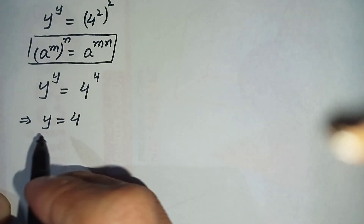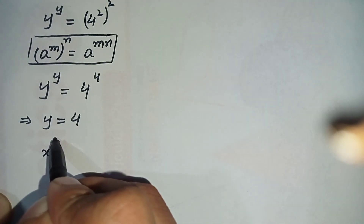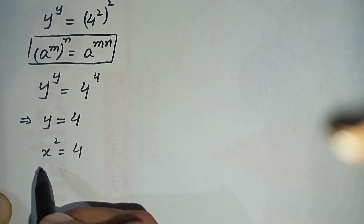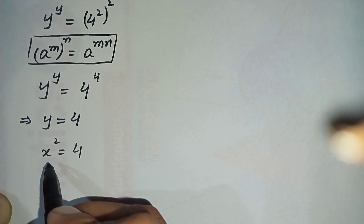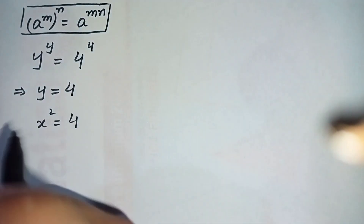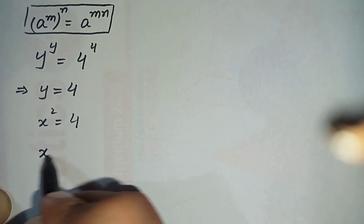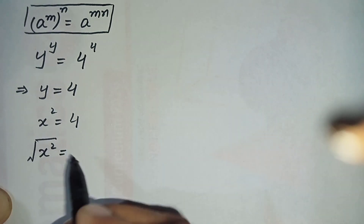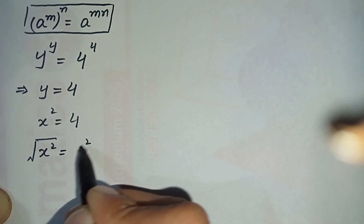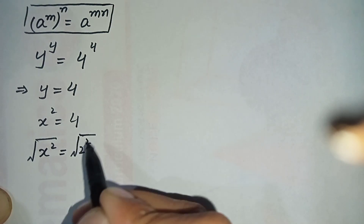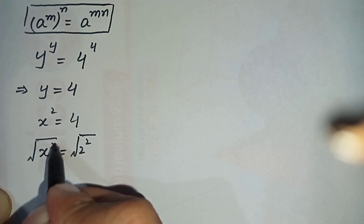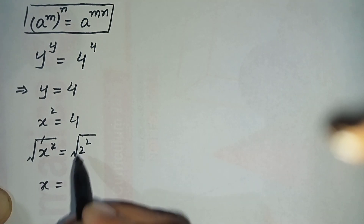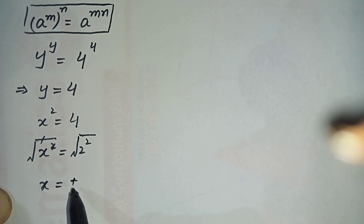Since we previously defined y as x², we will replace y with x², so it becomes x² is equal to 4. To further simplify, we take the square root on both sides. We can write 4 as 2², so the square root and the square cancel, giving x is equal to plus or minus 2.